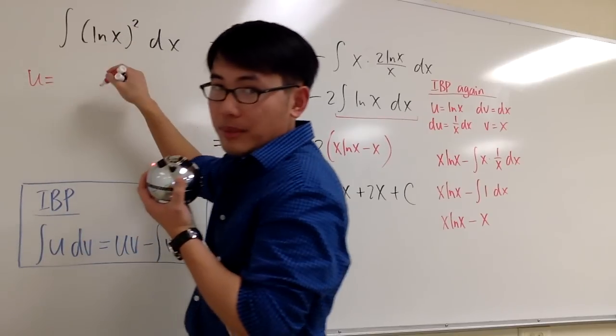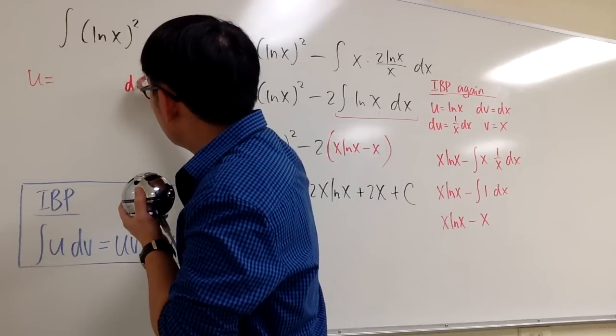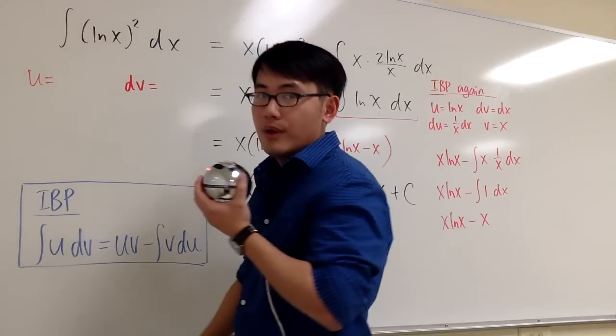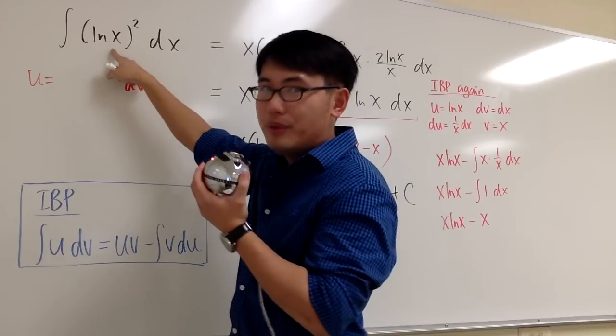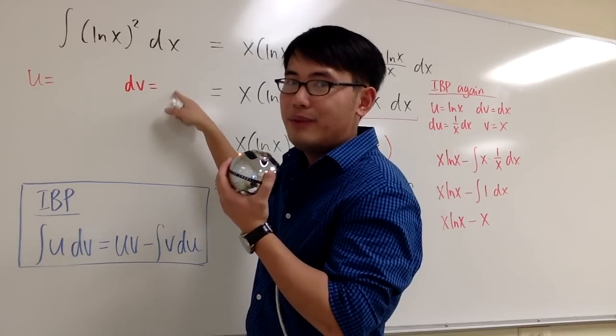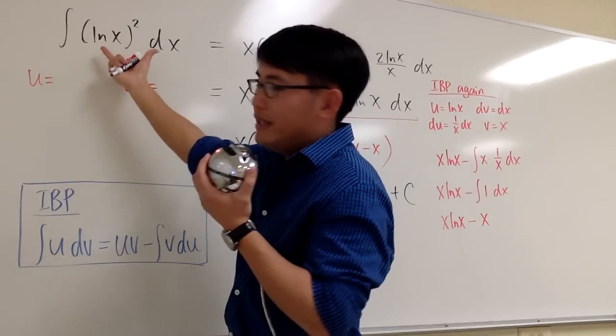Put down the u and think about something to be differentiated. And then we are going to write down the dv. As I mentioned, we only have one thing. If you put this into dv, you have to integrate that, and you go back to the original question.